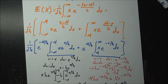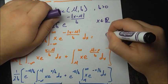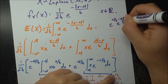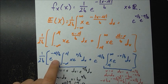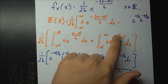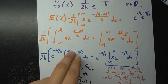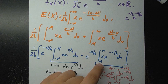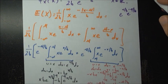We simplify by rewriting e to the x minus mu over b as e to the x over b times e to the minus mu over b, using laws of exponents. Since e to the minus mu over b has nothing to do with x, we pull it out as a constant. We do similarly for e to the mu over b on the other side. What remains are the integral from minus infinity to mu of x e to the x over b dx, and the integral from mu to infinity of x e to the minus x over b dx. This is just a routine calculation using integration by parts.